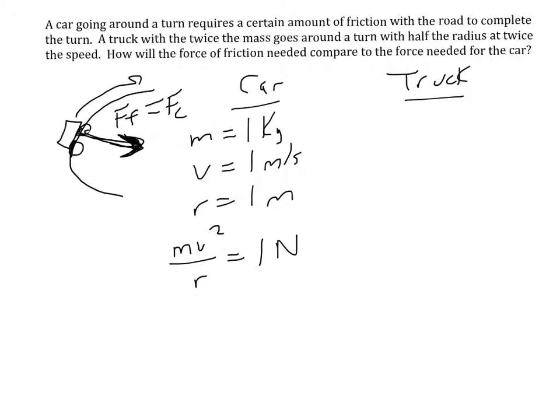Now the truck, what's different about the truck? The truck has twice the mass, 2 kilograms. The velocity is twice, and the radius is half, 0.5. So mv squared over r, we've got 2 times 2 squared over 0.5. So 2 times 4 is 8 divided by 0.5, I get 16 newtons.